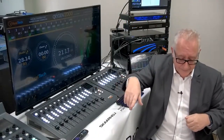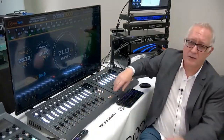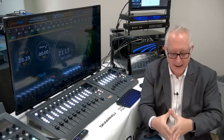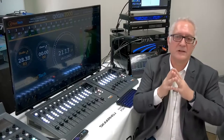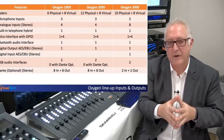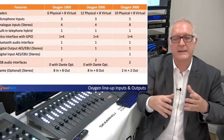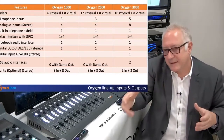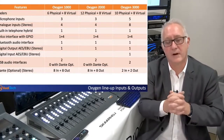The 3000 has one digital input, but the 1000 and 2000 do not have digital inputs. However, this can be solved. One of the major features of the Oxygen 1000 and 2000 is the Dante option — an optional card that allows you to have audio over IP in Dante format, which is also equivalent to AES-67, a more general audio-over-IP format.